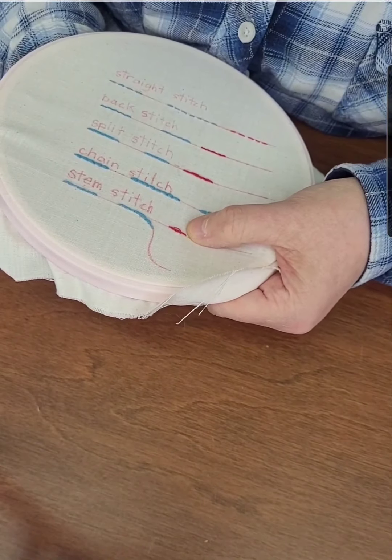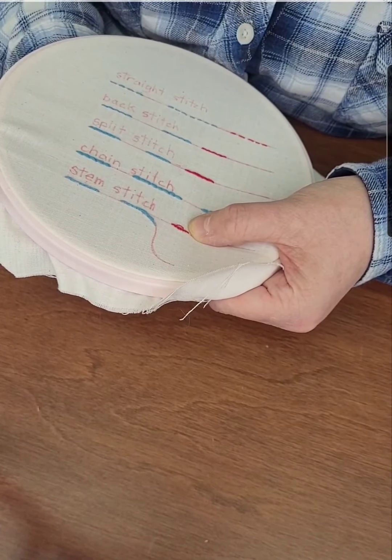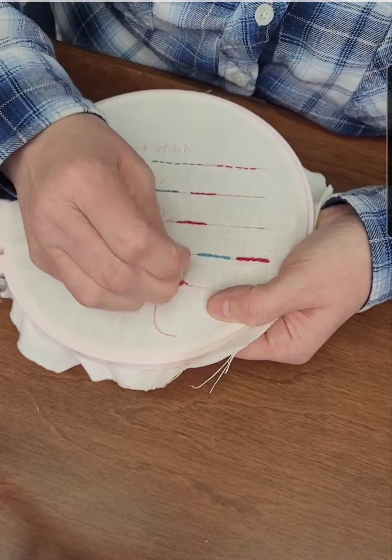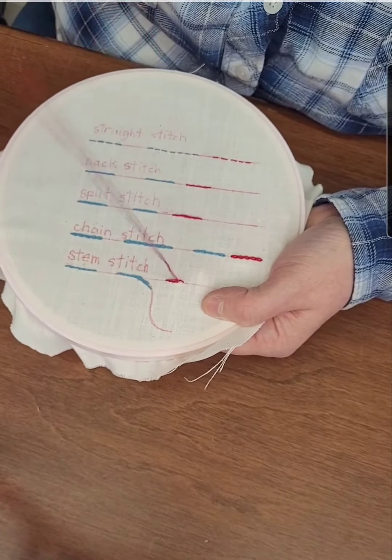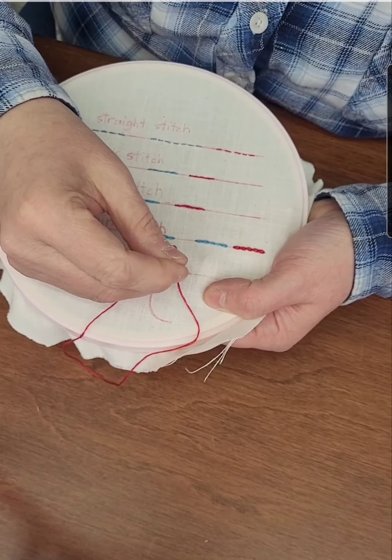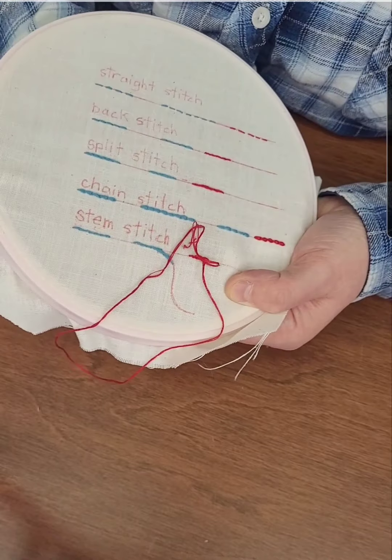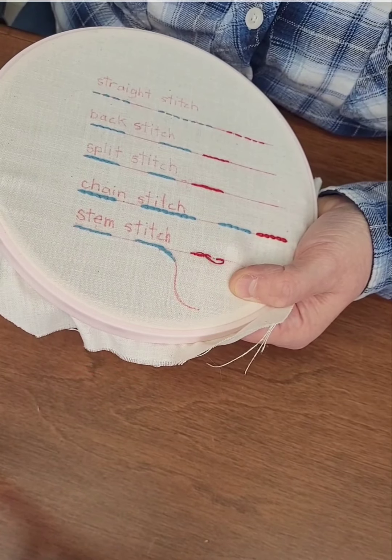And if you get a little bit of a loop you just have to pull those apart. So again bring up your needle in the center and below the last stitch you just did. That's called the stem stitch.